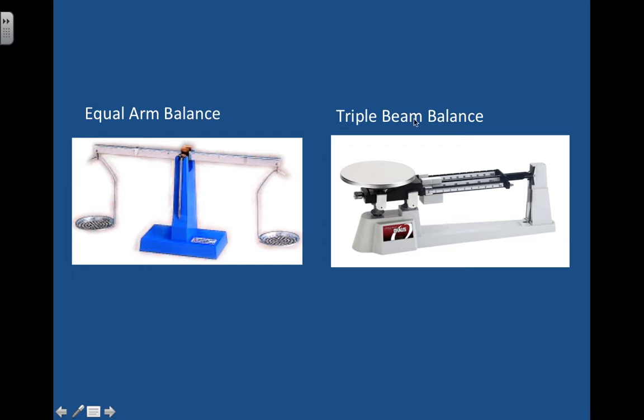The triple beam balance might be a little more familiar to you. You might have used it in sixth grade. So here you put your object on the pan and the balance, and then you move the sliders until it balances perfectly. And when it does, you read the sliders, and it tells you the mass. We are also not going to be using the triple beam balance in this class this year, but it's important that you know it's for mass, just in case you're ever asked.